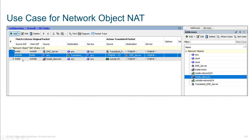Down below for rule two, we see inside to outside. The source is a network object called inside network — that's all of our users — destined anywhere, any service, though you could specify a service if you want to be more specific. The source is just going to use the IP address of the outside interface, which might come through DHCP from your service provider. So everybody on the inside will have their source IP translated to that address when they leave.